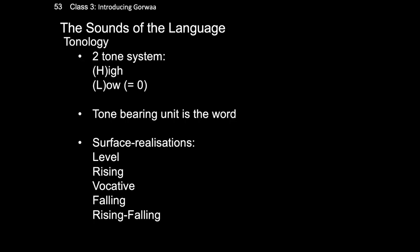Moving from phonology to tonology, we will now examine the tonal properties of Gorwa. Gorwa has two underlying tones, high and low, where low can probably be analyzed as zero. Also, the language tolerates one tone per word. As a result, the surface level realizations we observe in Gorwa words are level, rising, vocative, falling, and rising-falling.